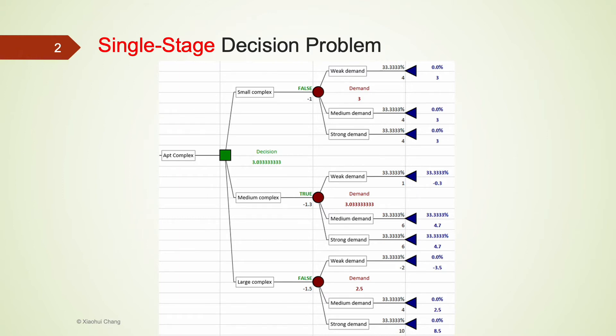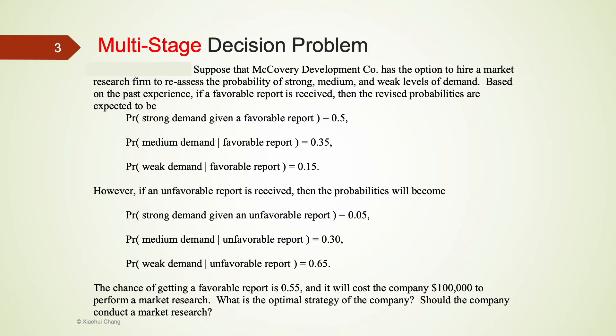In practice, a lot of decision problems are much more complicated than this example and may involve multiple decisions for the decision maker to make. Let's consider a revised version of the example. Instead of assuming all three states of nature—strong, medium, and weak demands—are all equally likely, the company could hire a market research firm to assess the likelihood of the market demand.